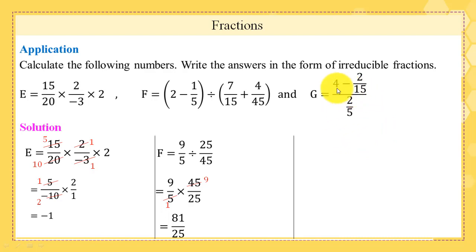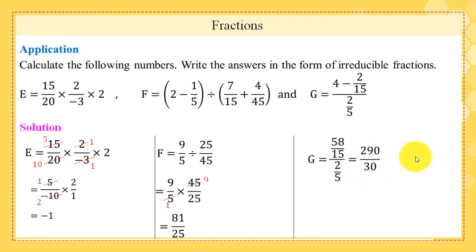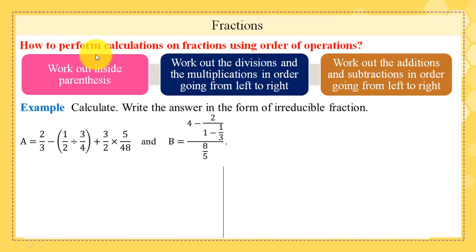Finally, g = (4 − 2/15) / (2/5). We first work in the numerator: 4 − 2/15 = 58/15. Then g = (58/15) ÷ (2/5) = (58×5)/(15×2) = 290/30 = 29/3, which is in irreducible form.